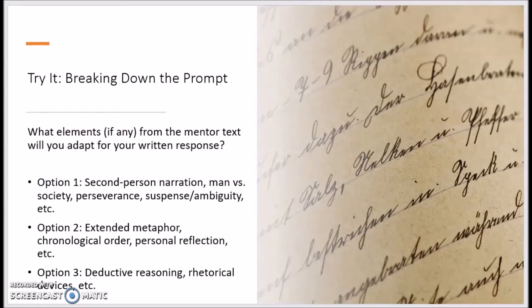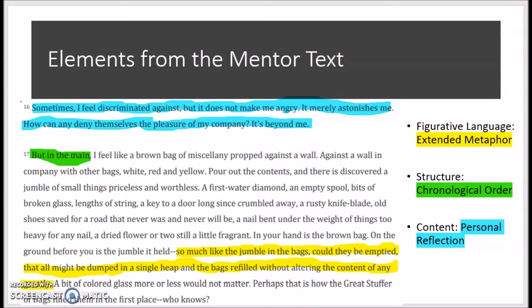If you choose option 2, the elements from the mentor text that you might want to adapt for your own writing are extended metaphor, chronological order, and personal reflection. Let's take a look at Zora Neale Hurston's essay, How It Feels to Be Colored Me. Notice how the author uses a brown paper bag filled with various items to illustrate how all people have elements of their personality and experiences that are unique, and yet there is a universality to what makes people human. This artistic use of extended metaphor helps us to understand a concept that is difficult to convey through language alone. How can you use figurative language like an extended metaphor in your poem to convey your complex ideas about self-discovery and self-pride?